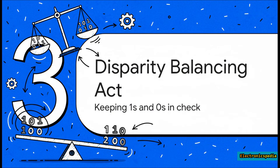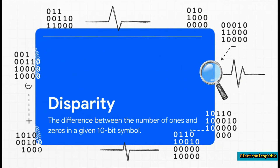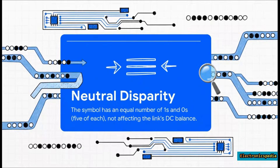This is where things get really clever. How does the system actually keep all those ones and zeros in check and maintain that balance? It all comes down to a concept called disparity. Disparity is the difference between the number of ones and zeros in one of those 10-bit symbols. So if a symbol has six ones and four zeros, its disparity is positive two. Some 10-bit symbols are perfectly balanced right out of the gate — they have five ones and five zeros, so their disparity is zero. We call this neutral disparity, and sending one of these doesn't affect the overall balance of the line at all.